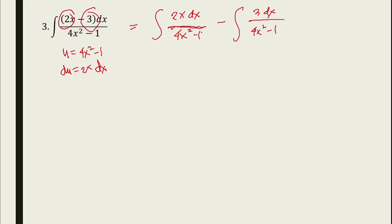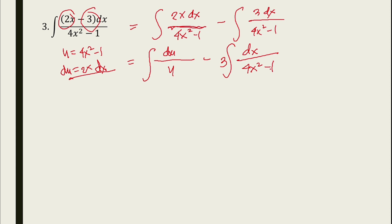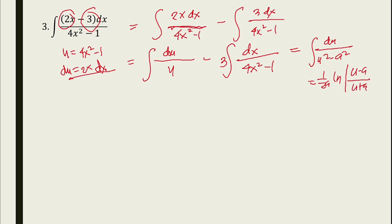This becomes: the integral of 2x dx over (4x squared minus 1), minus the integral of 3 dx over (4x squared minus 1). For the first part, with u equal to 4x squared minus 1, du equals 8x dx, so 2x dx equals du/4 — the neutralizing factor is 1/4. This gives (1/4) ln|4x squared minus 1|. For the second part, 4x squared minus 1 fits the pattern of du over u squared minus a squared.